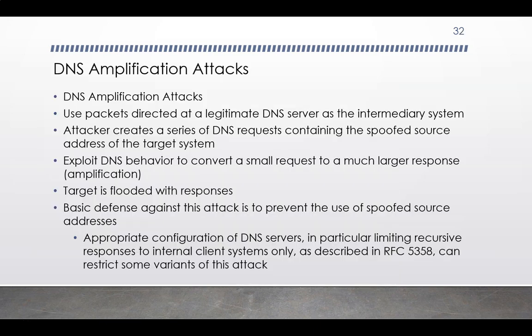A further amplification attack variation uses packets directed at a legitimate DNS server as the intermediary. Attackers achieve amplification by exploiting DNS protocol behavior to convert a small request into a much larger response — contrasting with original amplifier attacks that use responses from multiple systems. Using the classic DNS protocol, a 60-byte UDP request packet can easily result in a 512-byte UDP response — the maximum traditionally allowed. All that is needed is a server name with DNS records large enough for this to occur.